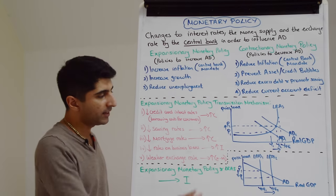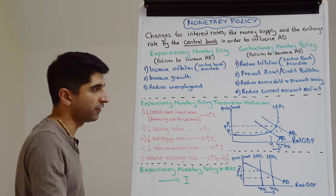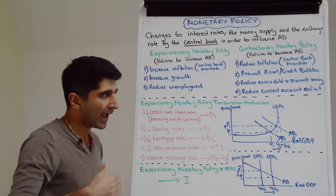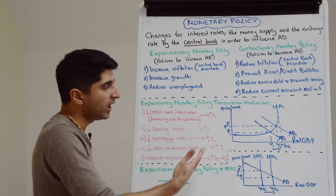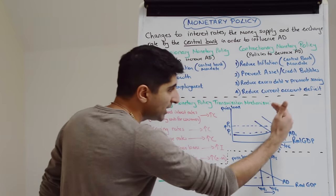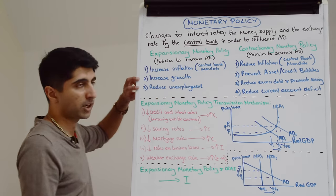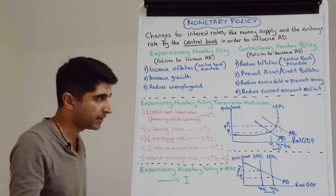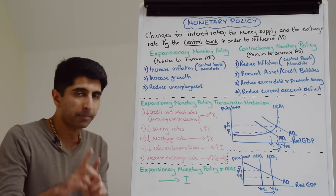With a weak currency, we get a boost to net exports in the AD equation. If these channels work and we see lower interest rates feed through into higher variables in the AD equation, then we see an AD shift to the right. There we can see the increase in growth and reduction in unemployment, and also the increase in demand-pull inflation, which might be desirable if inflation is below the target rate.